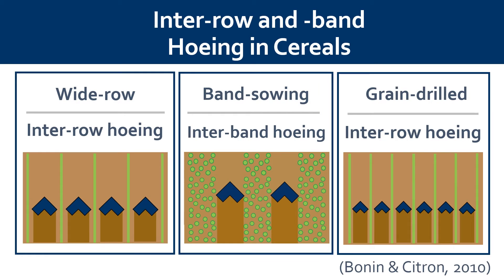A third system we're interested in trying out with growers is to not alter the crop's spatial arrangement and instead cultivate at those narrow six to seven inch rows that grain drills already plant at here in New England. New precision ag technologies such as GPS sensor and camera guidance systems are making this a potential option, since they allow for cultivation to be performed very close to the crop row. In fact, in 2010, researchers in France using a camera guidance system were able to successfully cultivate cereals sown at a six-inch row spacing at a speed of just over six miles per hour.